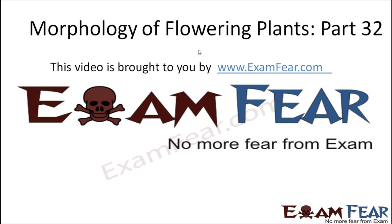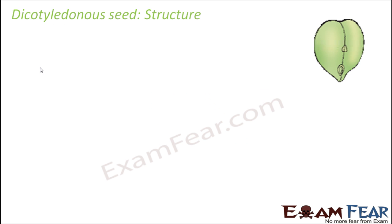Hello friends, this video on morphology of flowering plants part 32 is brought to you by examfeo.com — no more fear from exam. Now we will look at the structure of a dicot seed and a monocot seed, because the structure of a dicot and monocot seed are different due to the difference in the number of seed leaves. So let us first look at a dicot seed.